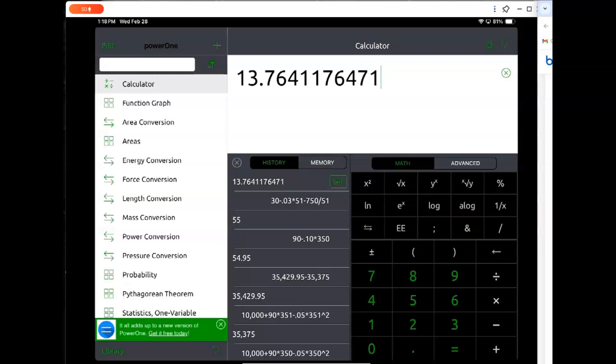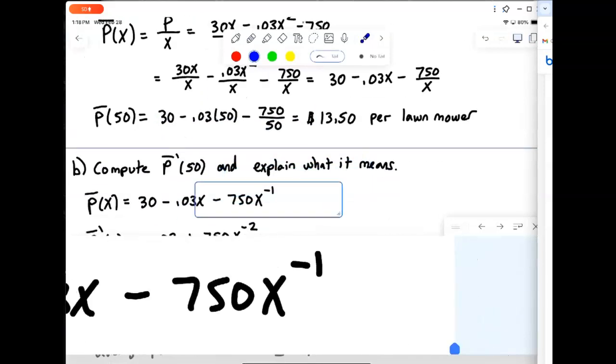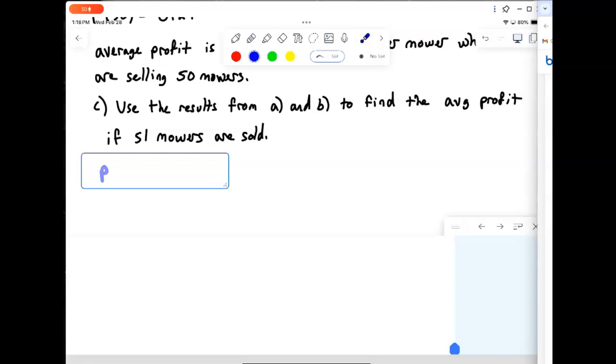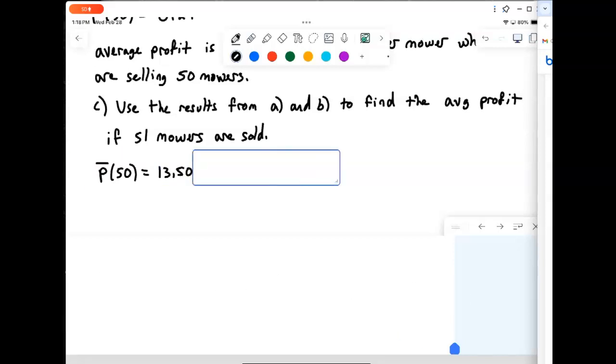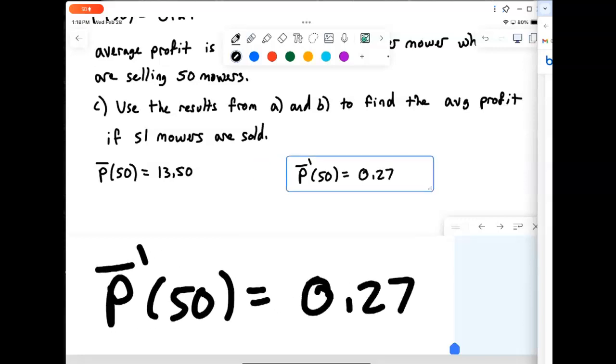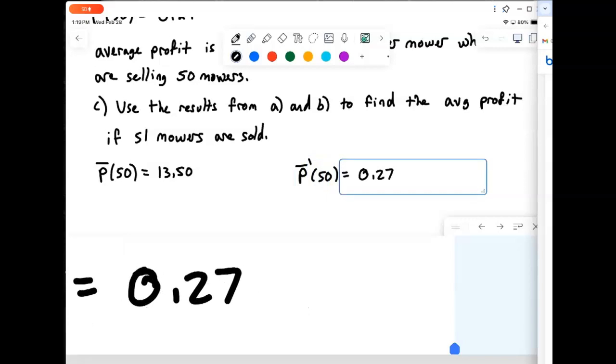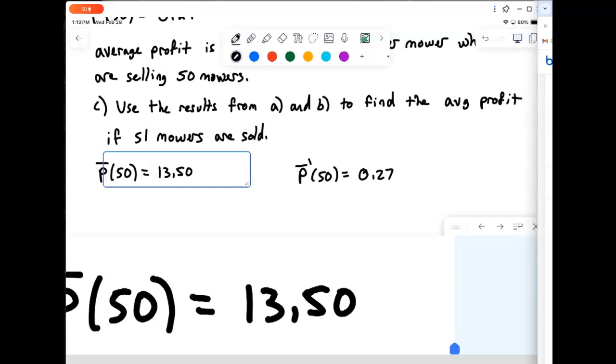Now that's the exact value, but we want to actually use the information we've gotten from parts A and B, and let's see how those work. So in part A we found out that P bar of 50 was 13.50. We found that P bar prime of 50 in part B was 27 cents. So we know that the average profit per mower is increasing by 27 cents when we're at 50 mowers.